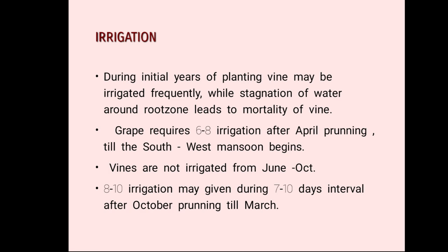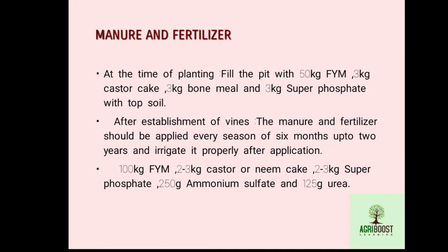At the time of planting, fill the pit with 50 kg of FYM, 3 kg castor cake or neem cake, 3 kg bone meal, and 3 kg superphosphate with topsoil. After establishment of the vine, manure and fertilizer should be applied every six months up to 2 years. The recommended dose is 100 kg FYM, 2 to 3 kg castor or neem cake, 2 to 3 kg superphosphate, 250 g ammonium sulfate, and 125 g urea.